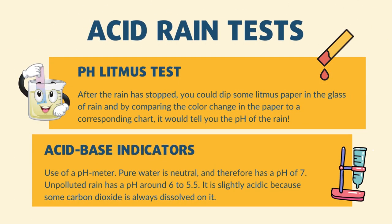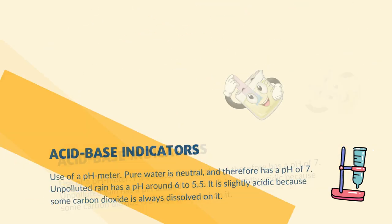There are two types of tests to determine whether rain is acidic or not. First, the pH litmus test — after the rain has stopped, you could dip some litmus paper in a glass of rain water, and by comparing the color change in the paper to a corresponding chart, it would tell you the pH of the rain. Second, acid-base indicators — use a pH meter. Pure water is neutral and has a pH of 7. Unpolluted rain has a pH of around 5.5 to 6, as it is slightly acidic because some carbon dioxide is always dissolved in it.